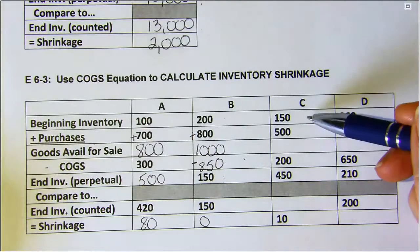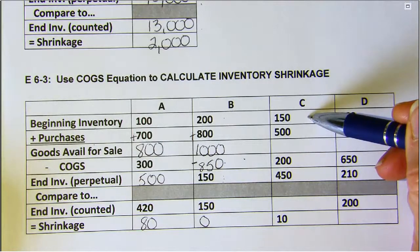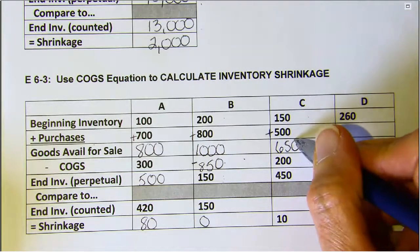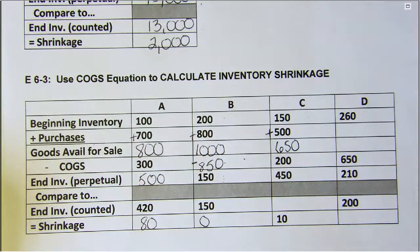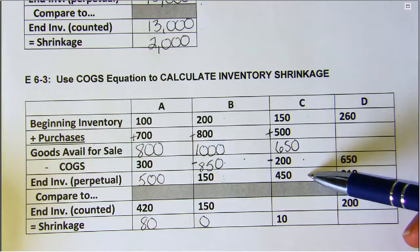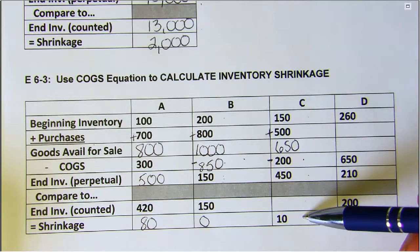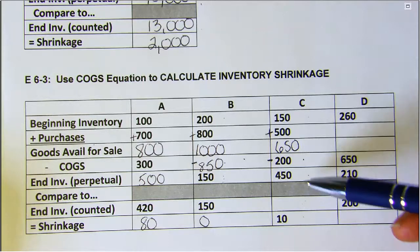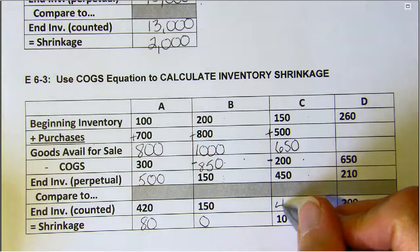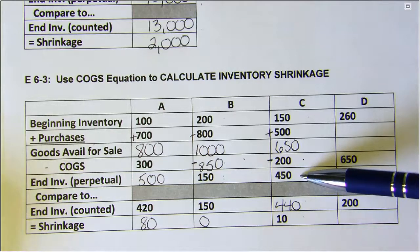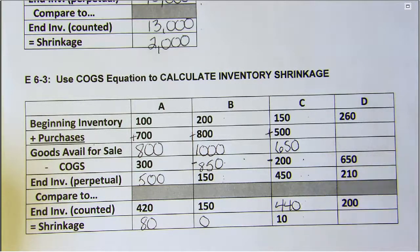Case C: We begin the period with $150 worth of merchandise inventory. We buy another $500, so we have $650 worth of goods available to be sold. If we sell $200 of those, then we have $450 that we should have on hand according to our perpetual records. They don't tell us how much is in the inventory count, but they say we lost $10 worth of merchandise. That means our count would be less than what we should have, so our count must be $440 — because if our records say $450 and we only have $440, that's a $10 shrinkage.